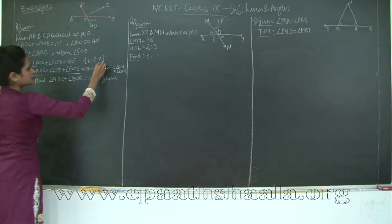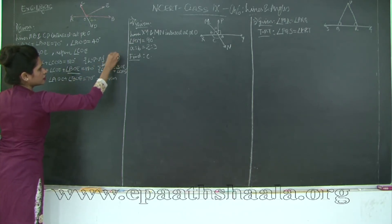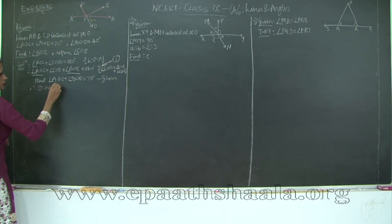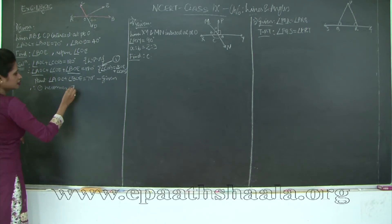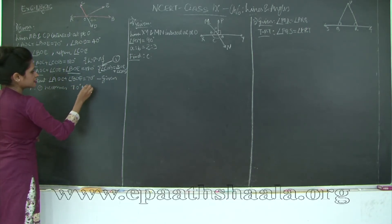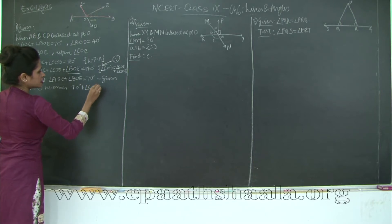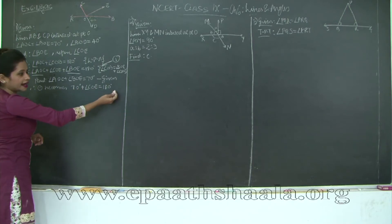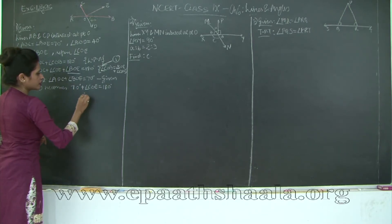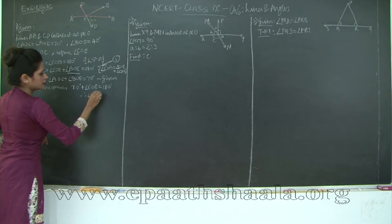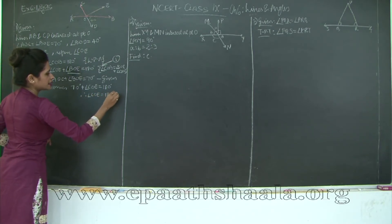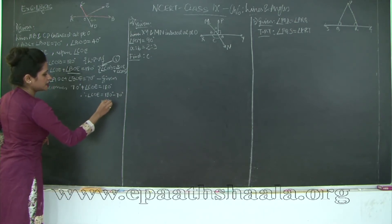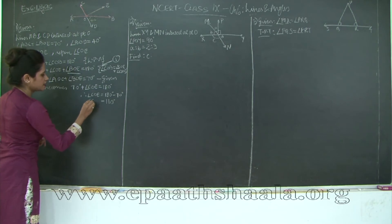Therefore, if I mark equation 1 as: angle AOC plus angle COE plus angle BOE = 180 degrees, substituting the given value — angle AOC plus angle BOE = 70 degrees — equation 1 becomes: 70 degrees plus angle COE is equal to 180 degrees. So angle COE is equal to 180 minus 70, which is 110 degrees.